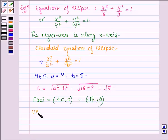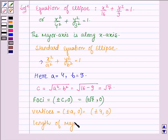And the vertices are given by plus minus a comma 0. So, we have plus minus 4 comma 0 since a is equal to 4. And we have to find the length of major axis. This is equal to 2 times of a. So, we have 2 into 4 is equal to 8.